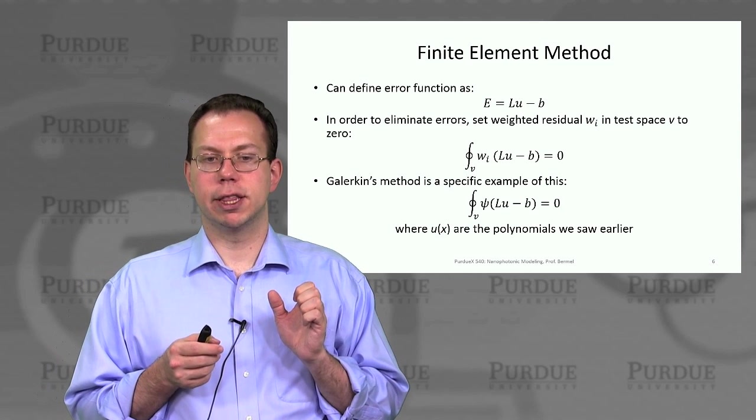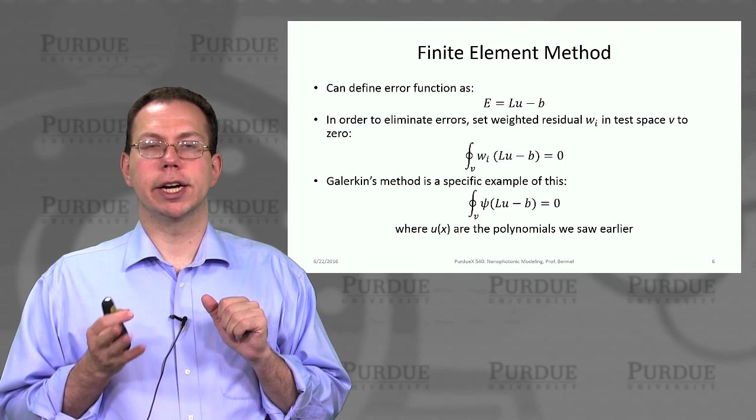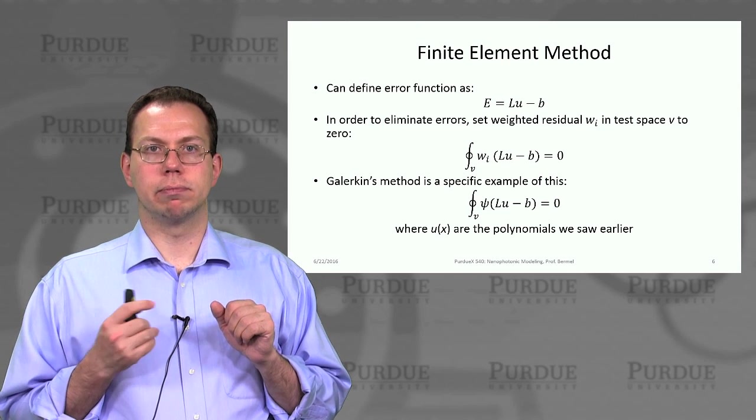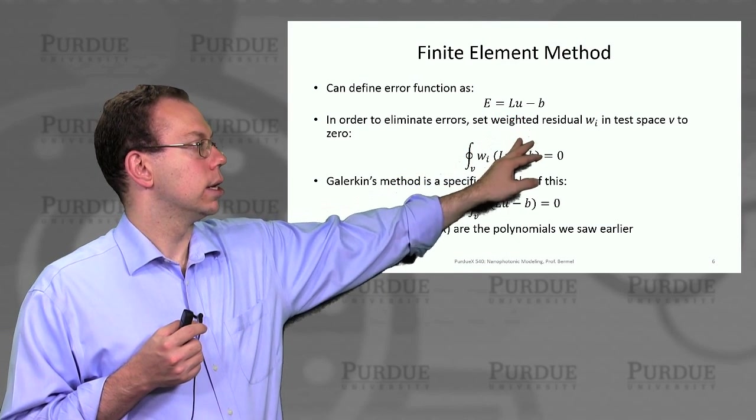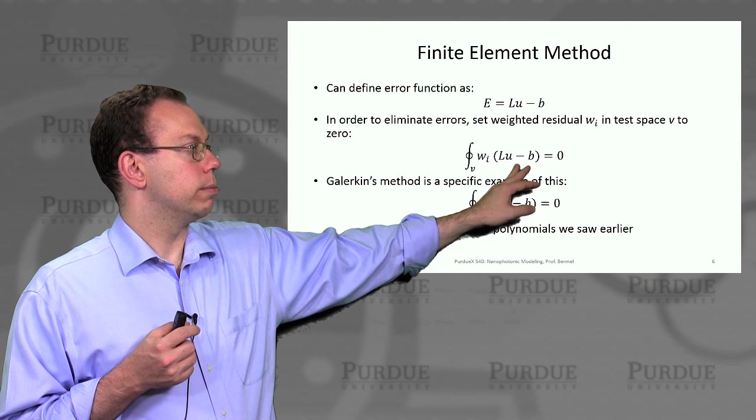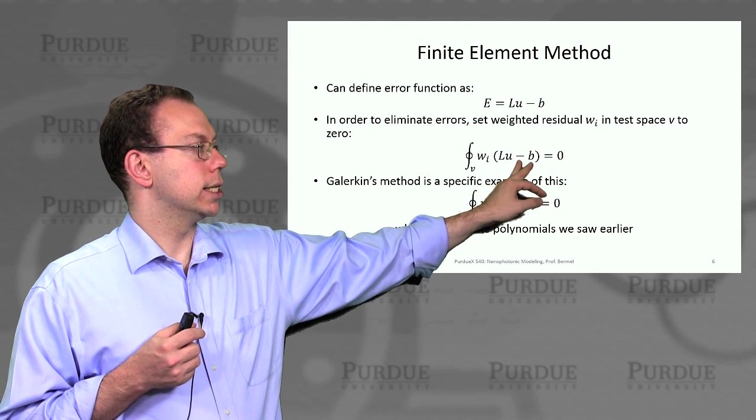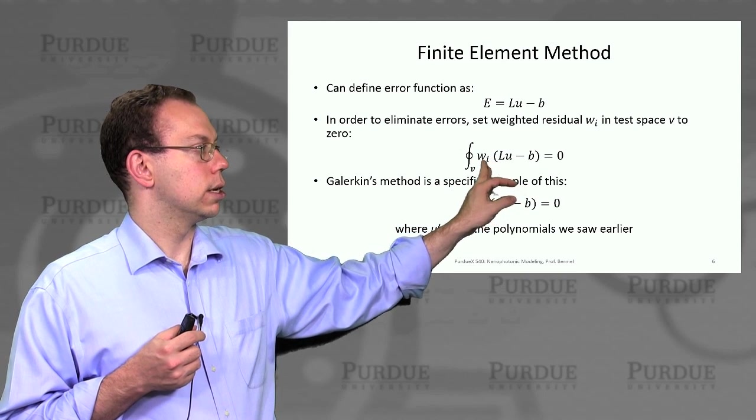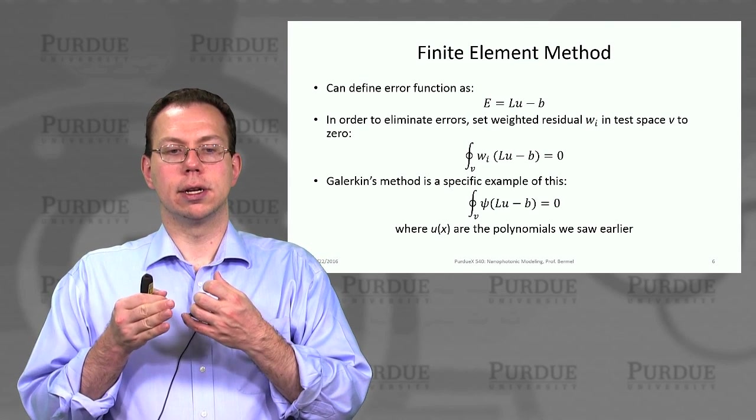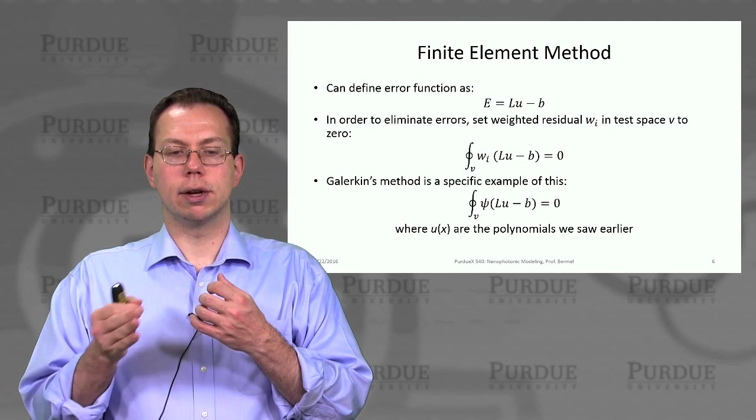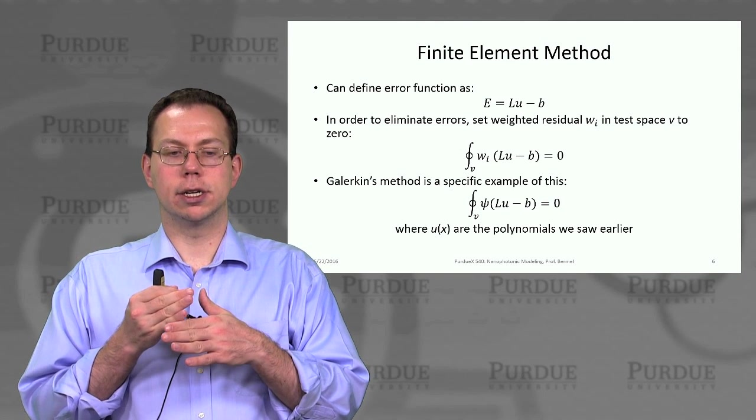And so in order to determine that this actually can be a useful solution to our basic problem LU equals B, then we actually define an error function which measures the deviation from what it should be, which is LU minus B equals 0. And so this is basically how we capture that. And so then the best way usually to minimize the errors is that we would have some sort of residual Wi that multiplies LU minus B. And then at each point in the so-called test space where we basically are setting off all of our different elements, then when we integrate over the interval then we would get an average of 0. So there may be small errors here and there, but we're trying to make the errors cancel each other out.